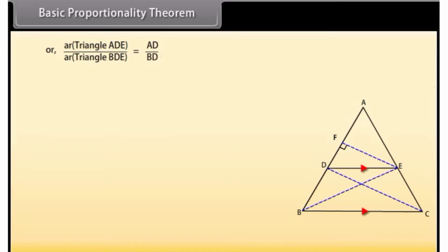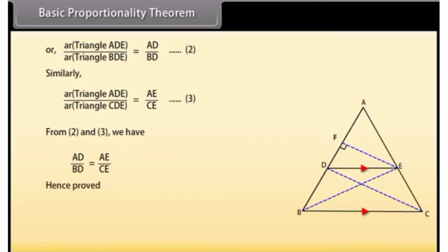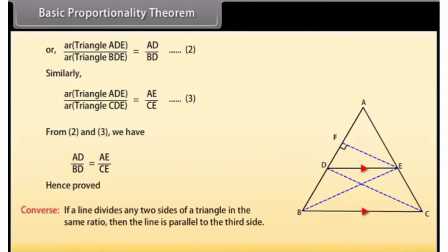Since area of a triangle = (1/2) × base × altitude, area of triangle ADE / area of triangle BDE = AD/BD ... (2). Similarly, area of triangle ADE / area of triangle CDE = AE/EC ... (3). From (2) and (3), AD/BD = AE/EC. Hence proved. The converse is also true: if a line divides any two sides of a triangle in the same ratio, then the line is parallel to the third side.